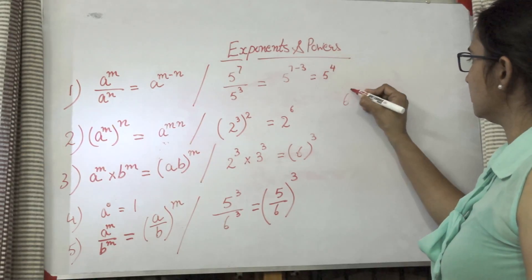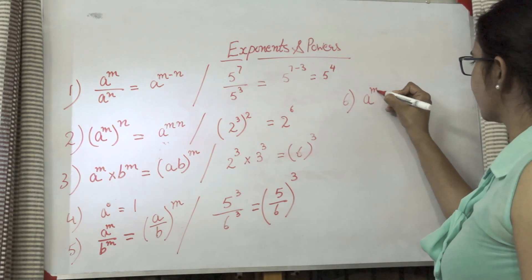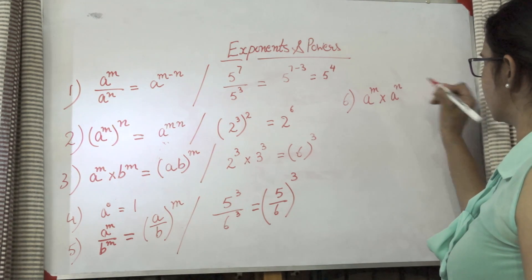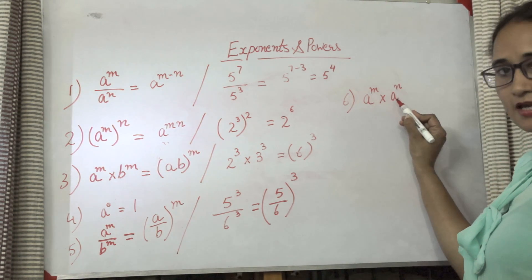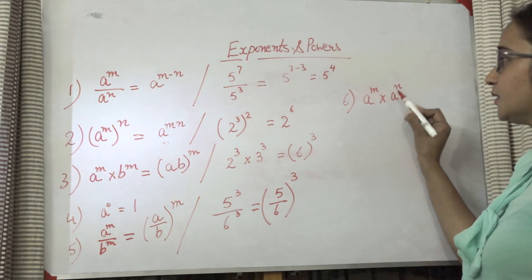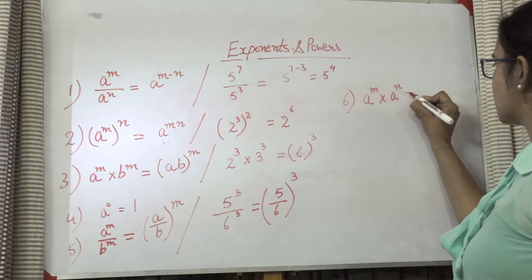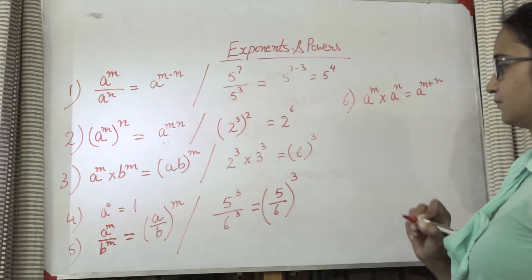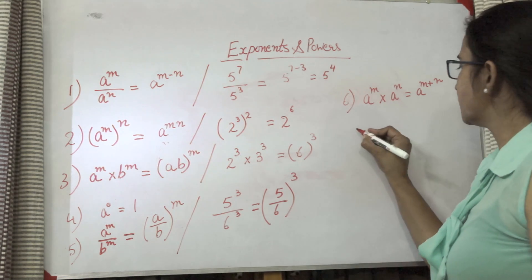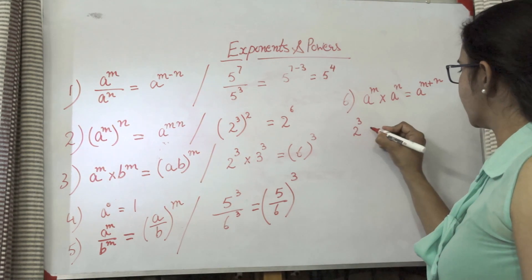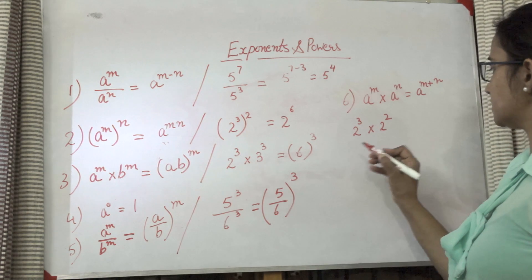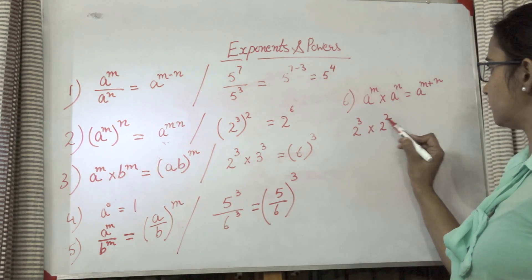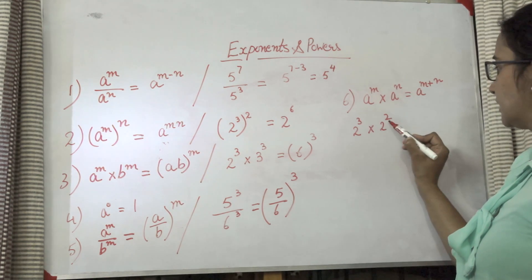There is one more law — the 6th law: a raised to the power m into a raised to the power n. Here base is same and they are getting multiplied, but powers are different. So in this case, powers will get added. For example, 2 raised to the power 3 into 2 raised to the power 2 — a is 2, m is 3 and n is 2, so the answer is 2 raised to the power 3 + 2 = 2 raised to the power 5.